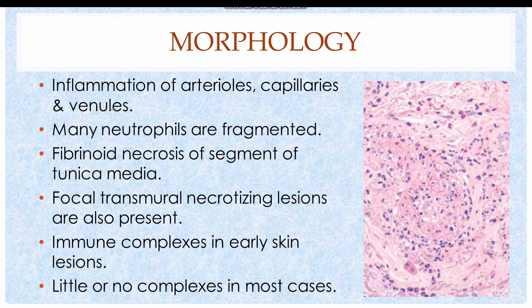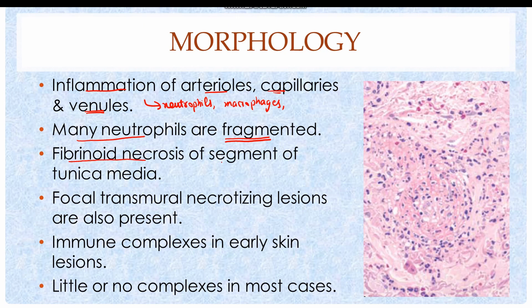The histological features resemble polyarteritis nodosa, but medium to large blood vessels are spared, so there is only inflammation of arterioles, capillaries, and occasionally venules. The inflammation is characterized by the presence of inflammatory cells such as neutrophils, macrophages, and other mononuclear cells. One particular feature is that many neutrophils are fragmented. Just like polyarteritis nodosa, there is also fibrinoid necrosis of a segment of the tunica media. In the entire segment involved, there are focal points of transmural necrotizing lesions in the blood vessel wall.